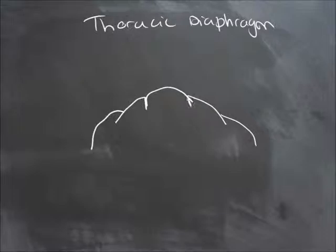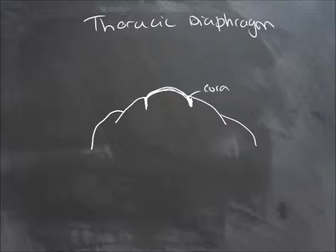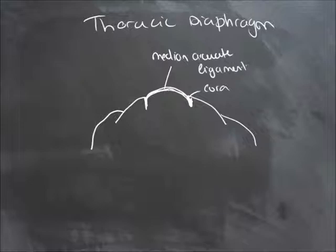Here you have the crura — the left and right crura — and they join in the middle to form the median arcuate ligament. There is only one median arcuate ligament, formed by the left and right crura joining together.